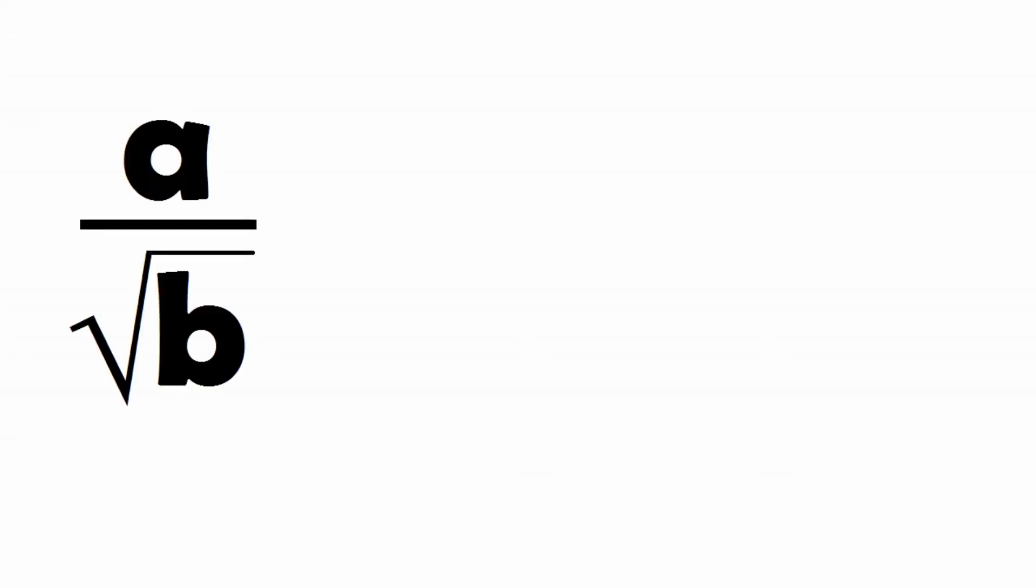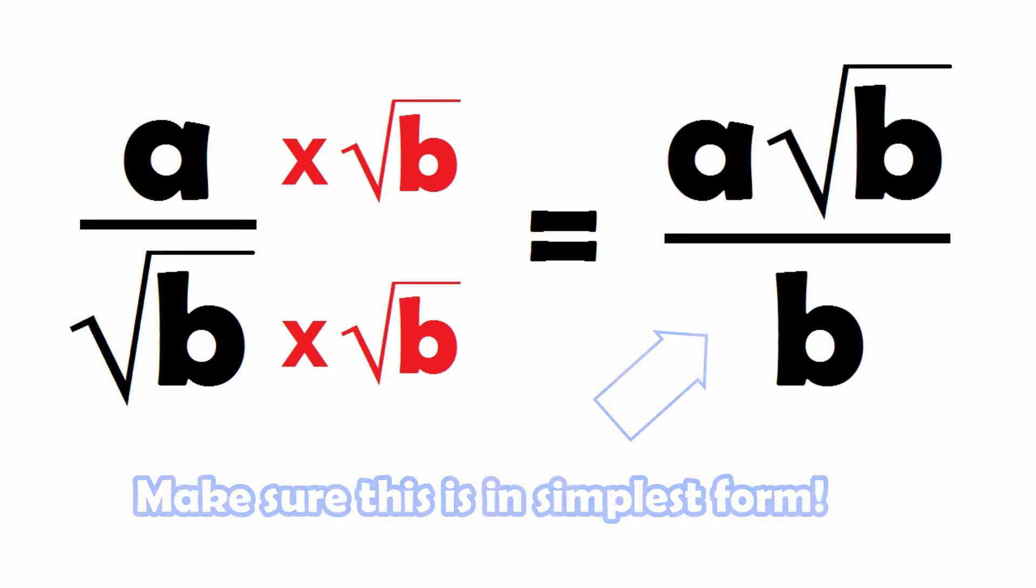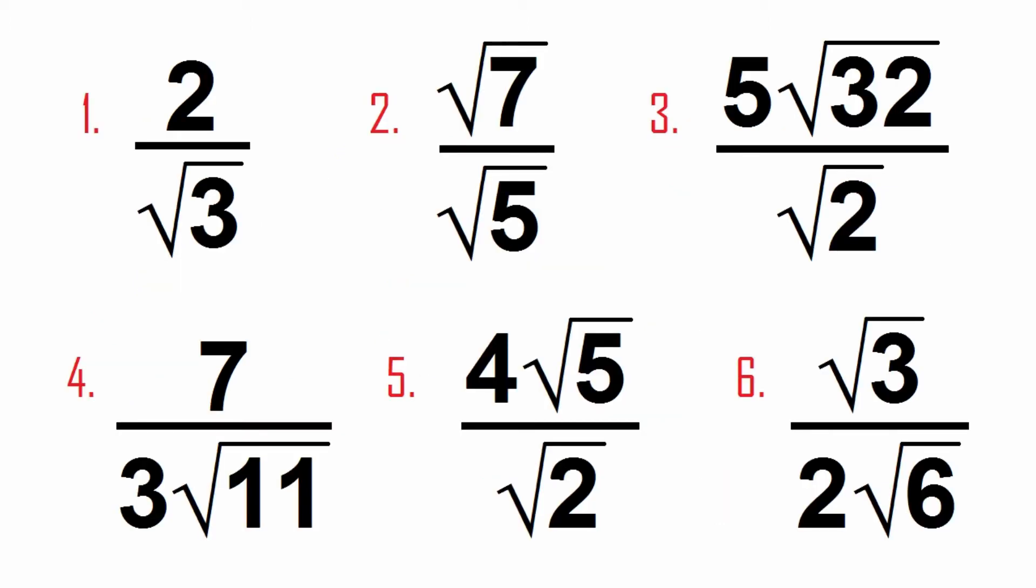So basically, in order to rationalize an expression where the surd is the denominator, we need to multiply both sides of the fraction by the surd that we want to cancel out. Then, all we need to do is check that our answer is in simplest form. That's it. Try a few questions of your own. Make sure your final answer is written in simplest terms, either by taking out common factors or splitting the radicand into perfect squares so that you can simplify.